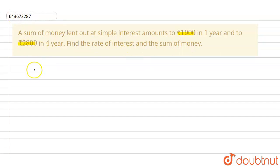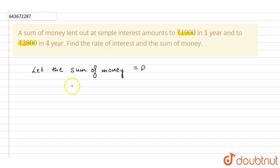First of all, we'll let the sum of money — that is the principal amount — equal to P, and the rate of interest equal to R.